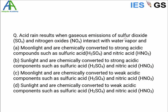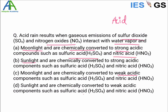The next question: acid rain results when gaseous emissions of sulfur dioxide and nitrogen dioxides interact with water vapor. This is about the formation of acid rain. Two components are present — oxides of sulfur and nitrogen, and water vapor. From the options — moonlight, sunlight, chemical conversion, strong acids, weak acids — sulfuric acid, nitric acid, and chemical conversion appear in all options, so we need to decide between the remaining factors.